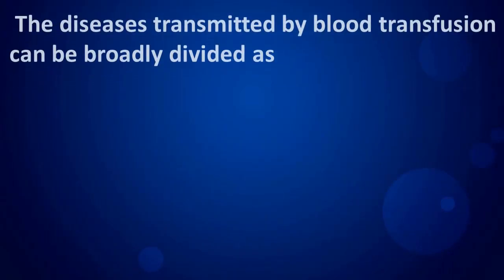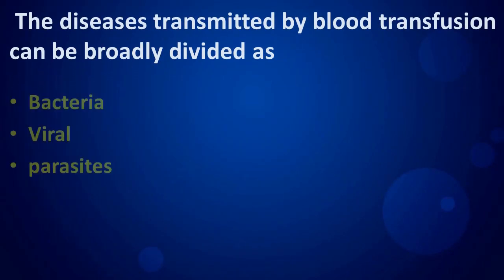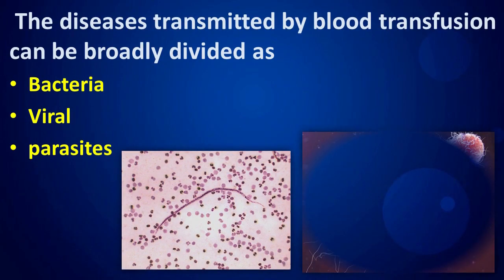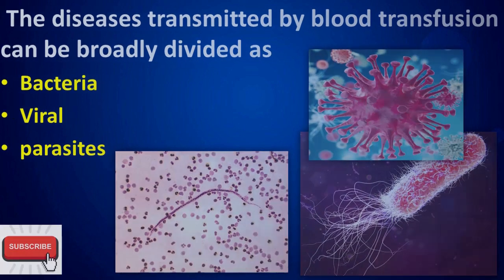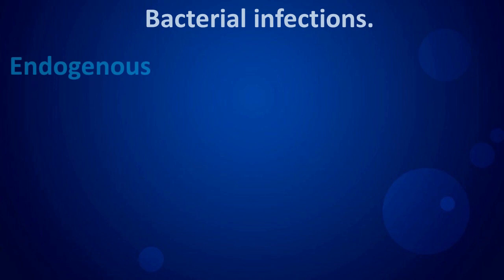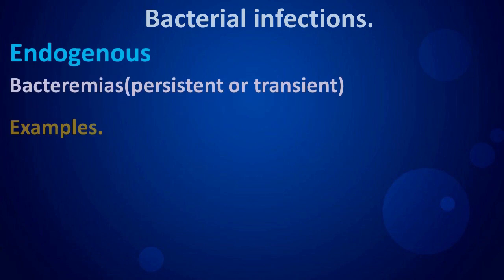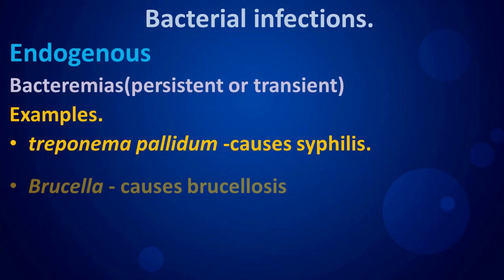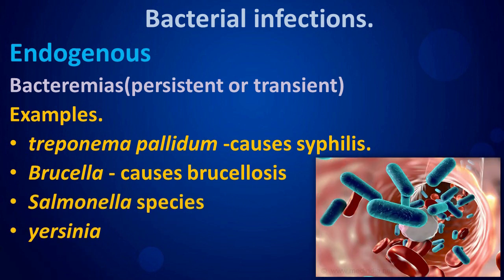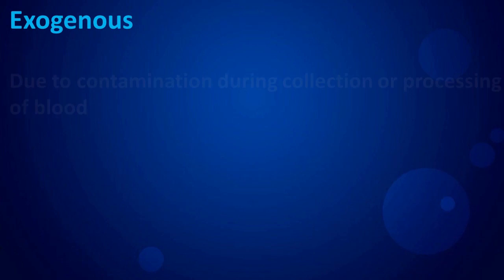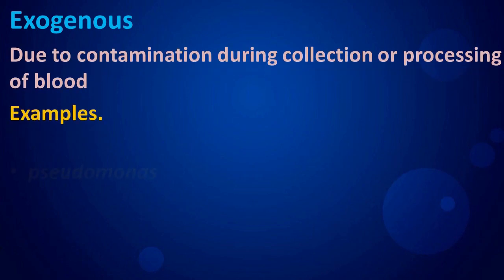Diseases transmitted by blood transfusion can be broadly divided into bacteria, viral, and parasites. Bacterial infections include endogenous bacterium, which may be persistent or transient. Examples include Treponema pallidum, which causes syphilis, Brucella, which causes brucellosis, and Salmonella species and Yersinia.